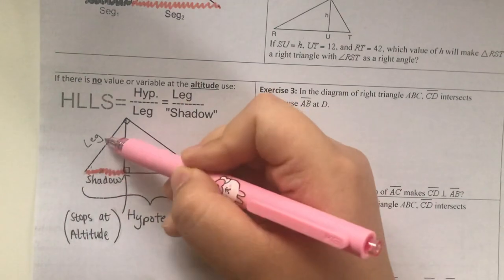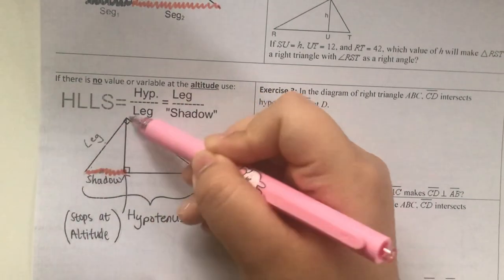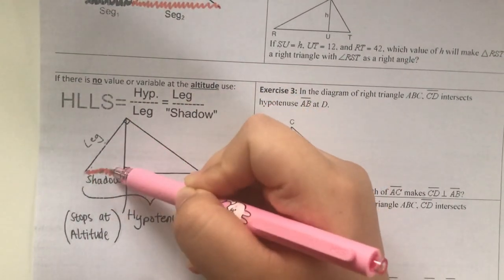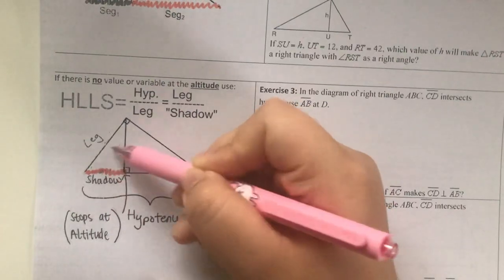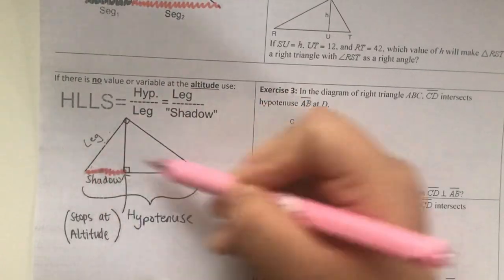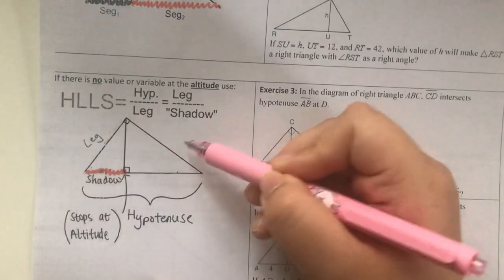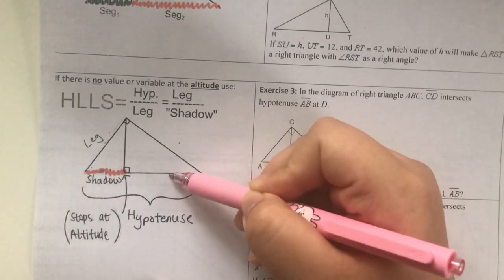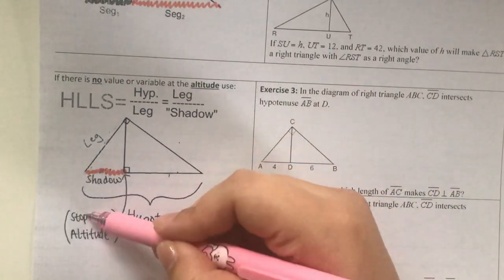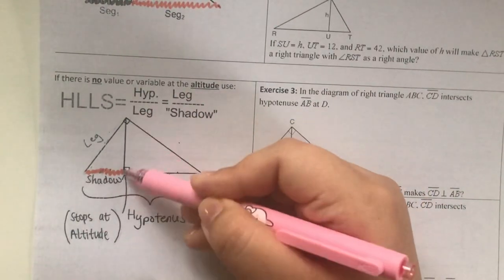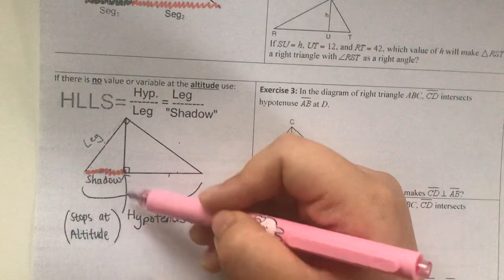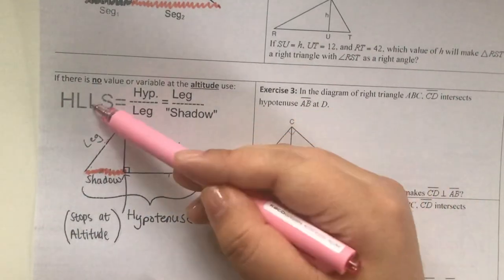L represents leg, and the other L represents the other leg. S represents shadow. Shadow stops where the altitude is at. But since I don't need to find out the altitude, I don't need it, I'm going to use HLLS.